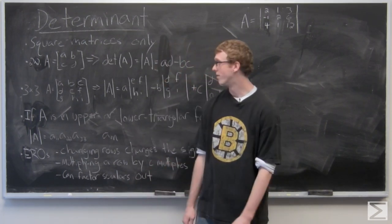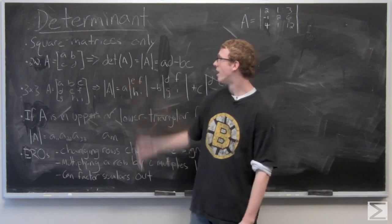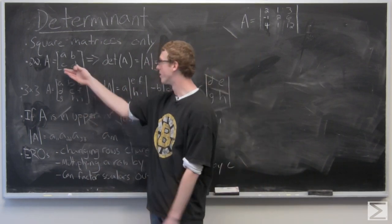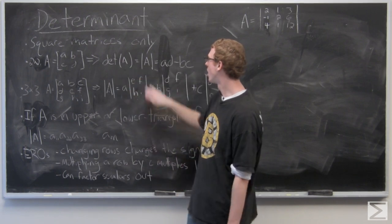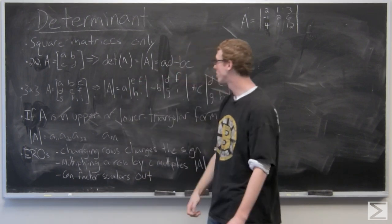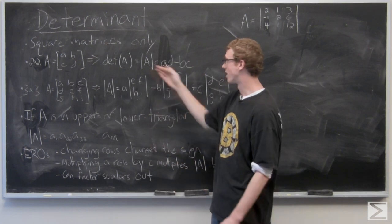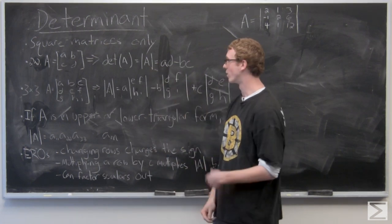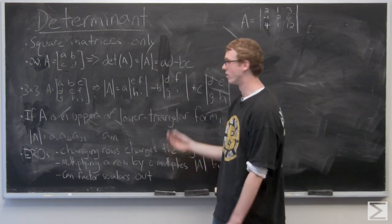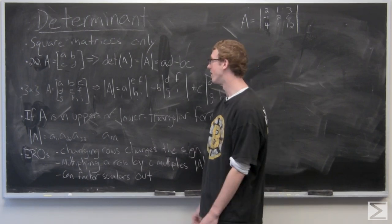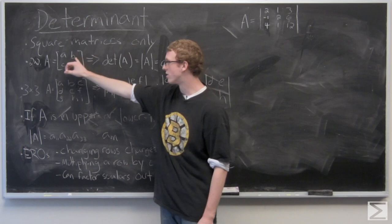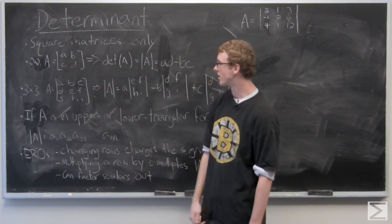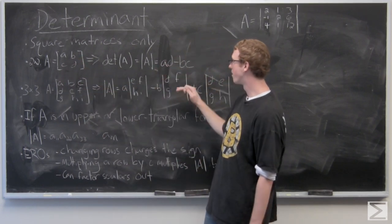So the determinant of a 2x2 matrix A, it's very simple. We have a 2x2 matrix A, B, C, D. So the determinant of A, also denoted with absolute value type symbols. Don't be confused, that's not the absolute value of A. When we're looking at matrices, those symbols mean determinant. And for A, it's simply the entries on the diagonal subtracted—so you have AD minus BC.